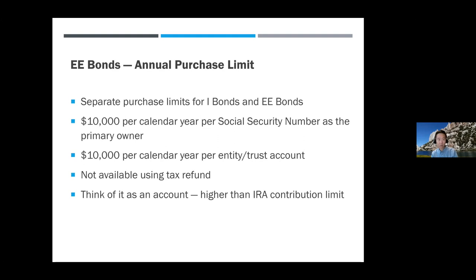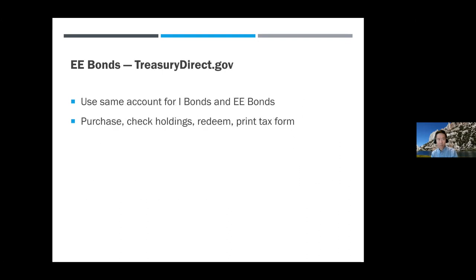Think of double-E bonds as another account — the limit is higher than your annual IRA contribution of $6,000-$7,000. After you max out your tax-deferred and Roth accounts, you can buy additional I bonds and EE bonds from the government. The limits between I bonds and EE bonds are separate — if you've already maxed out I bonds, you can also max out double-E bonds. If you already have a TreasuryDirect.gov account for I bonds, you use the same account to buy EE bonds — you hold both in the same account.